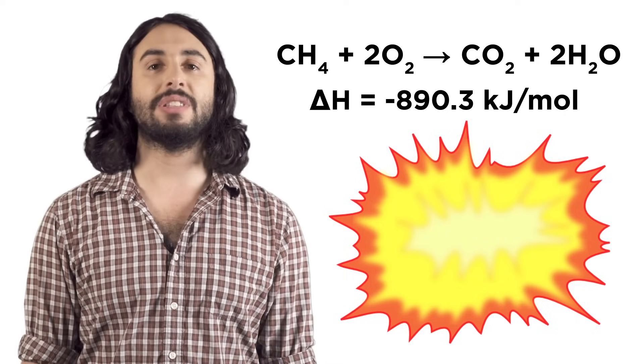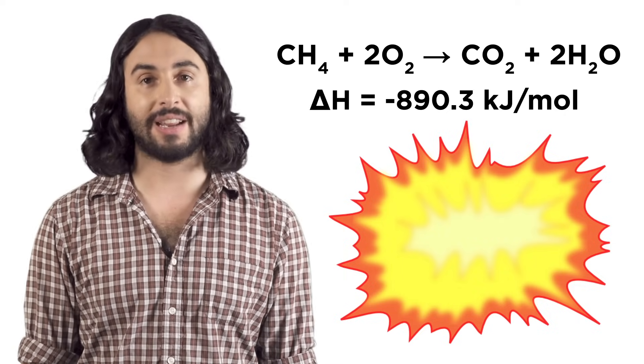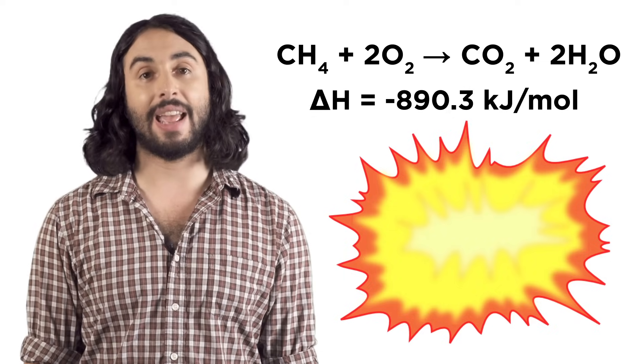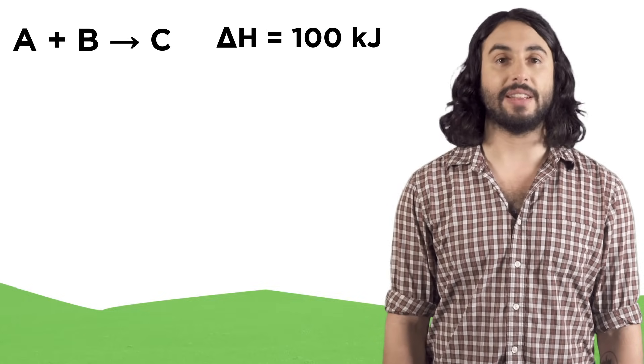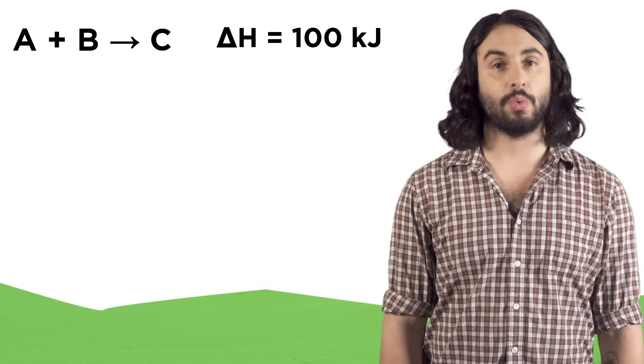There are two ways we can use tabulated thermochemical data to calculate the delta H of any reaction. The first way requires that we manipulate thermochemical equations in specific ways, so let's be aware of some rules.